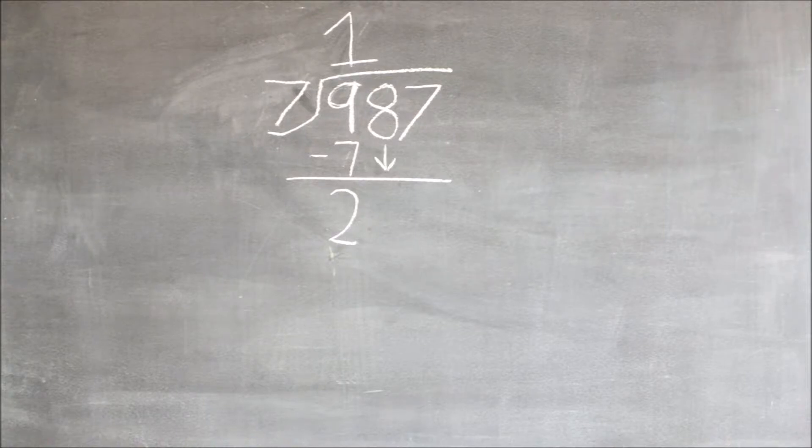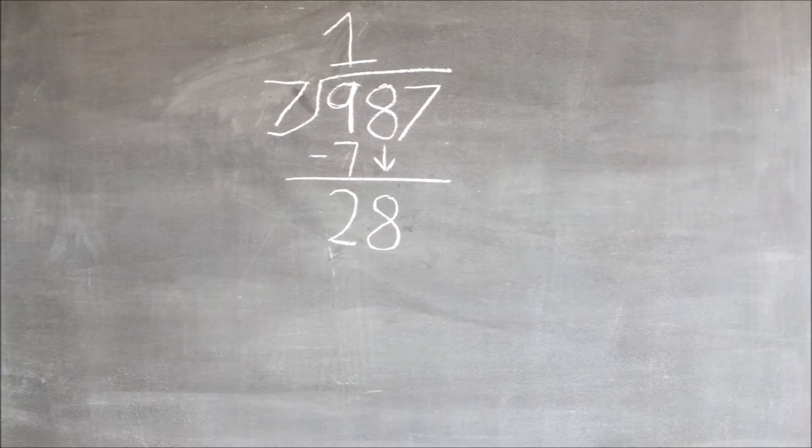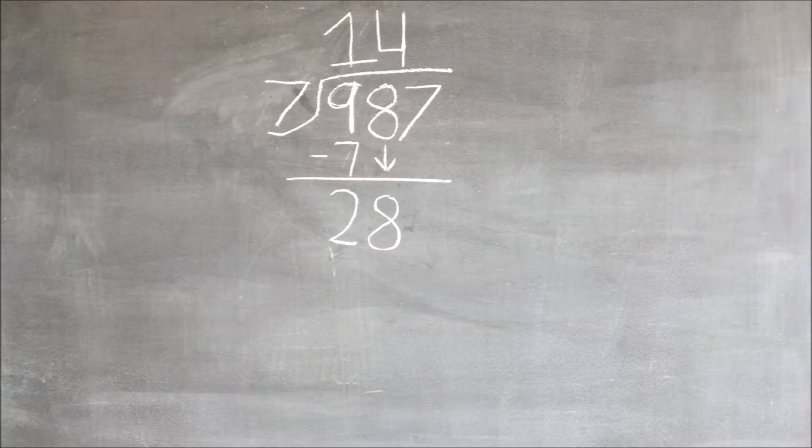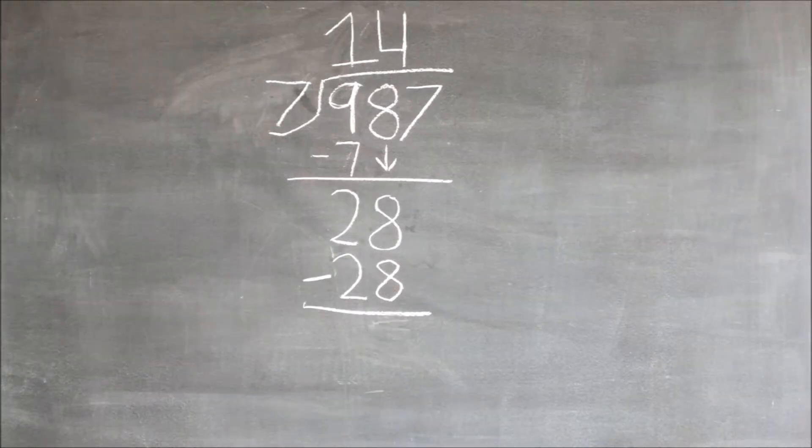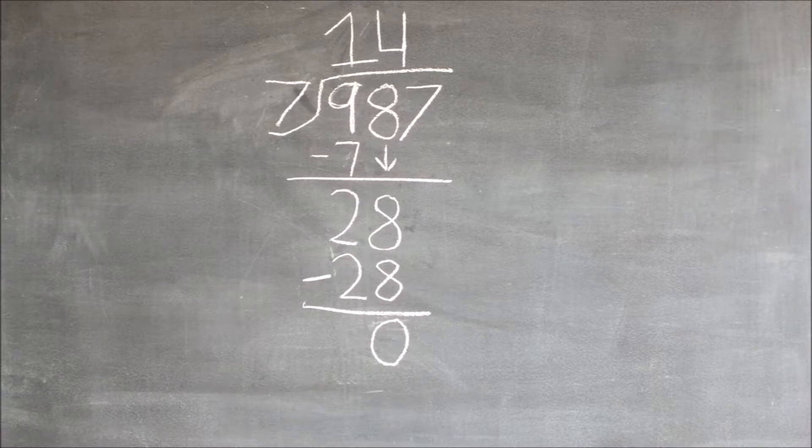Now we have to bring down the eight. Now we will do the same steps, but we will do it with a 28 instead. Seven goes into 28 four times. Seven times four equals 28, and then we write the 28 under the 28, and then we subtract them both. Subtracting them both equals zero.